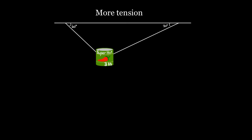You bought a huge canister, an aluminum can, of super hot red peppers — three kilograms worth — and you hung them from two strings from the ceiling, because you don't want anyone to get your super hot red peppers. You wanted to know: what's the tension in both of these strings? If this is the angle that the strings make with the ceiling, what are these two tensions? This problem's hard. This problem's spicy. This is a spicy tension problem. Let's start with something a little more mild and work our way up to see how this works.